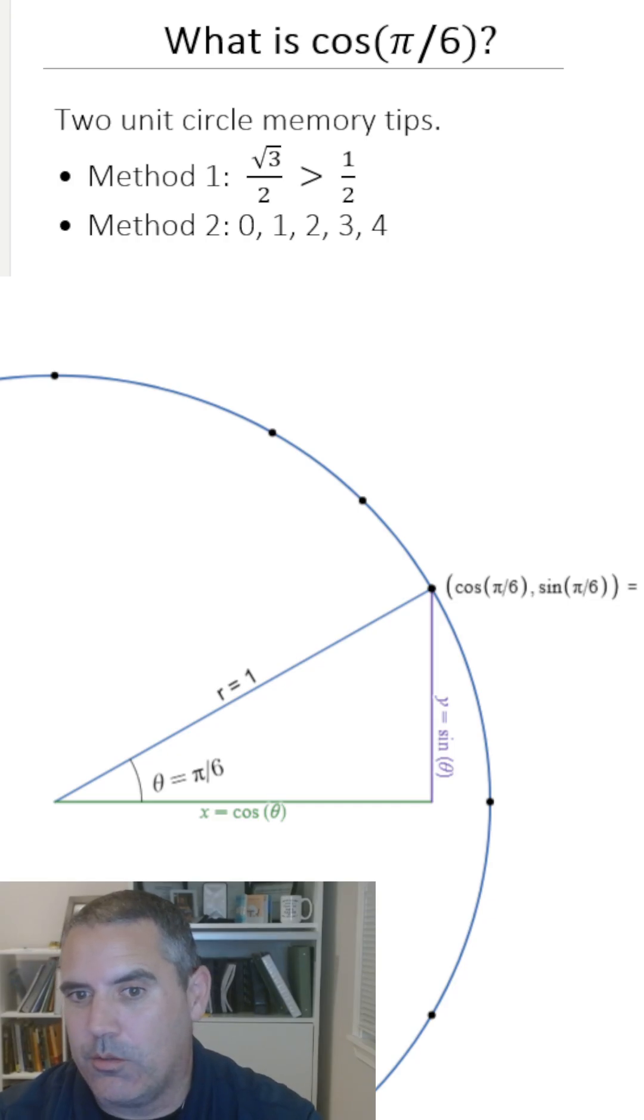If you can remember that cosine is the x value, which you can remember because cosine goes with the adjacent side to the angle. So if you can remember cosine is the x value, then you can look at that triangle and say which is bigger, the x or the y.